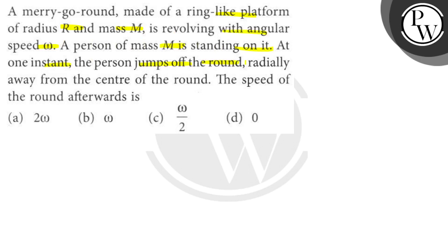At one instant, the person jumps off the round radially away from the center of the round. The speed of the round afterwards is: option A, 2 omega; option B, omega; option C, omega by 2; option D, 0.